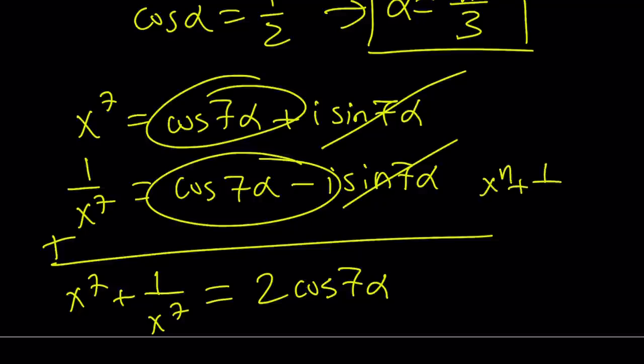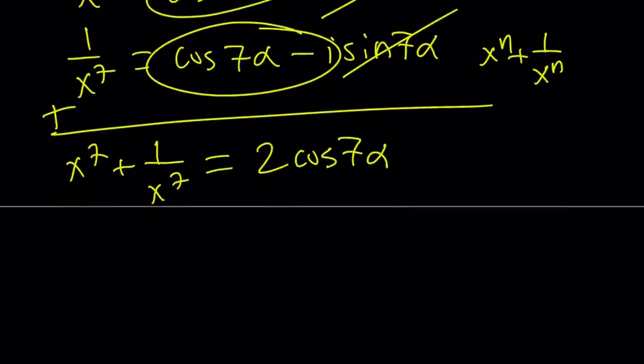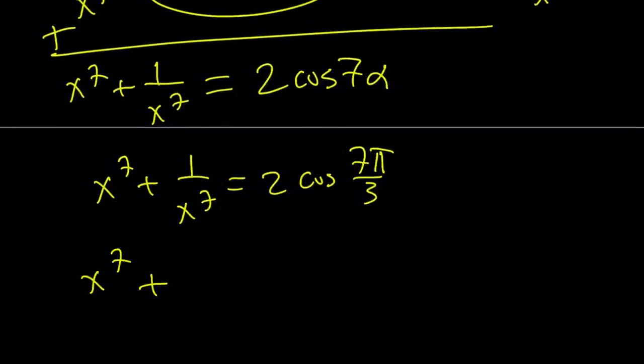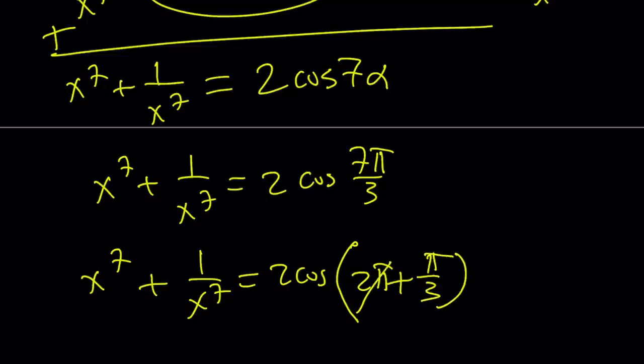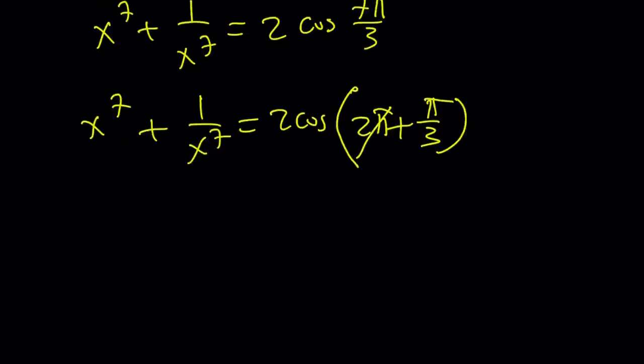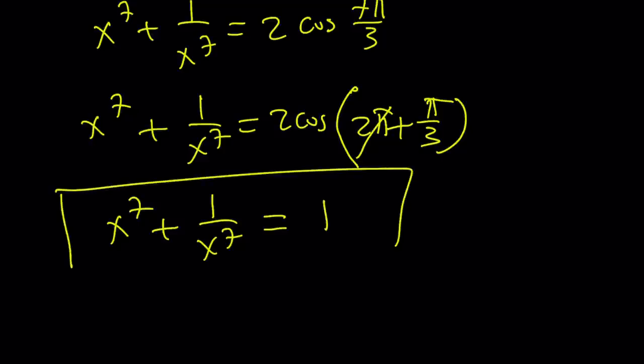Alpha was pi over 3, so let's replace alpha with pi over 3. 7 times pi over 3. But 7 pi over 3 is greater than 6 pi over 3, so we can write this as 2 pi plus pi over 3. And 2 pi is like 0. You can just totally ignore it. Cosine pi over 3 is 1 half. So x to the 7th plus 1 over x to the 7th, just like x plus 1 over x, becomes 2 times 1 half, which is 1. This brings us to the end of this video.